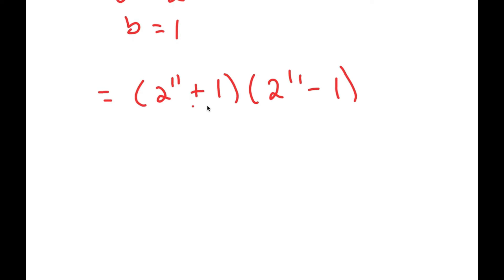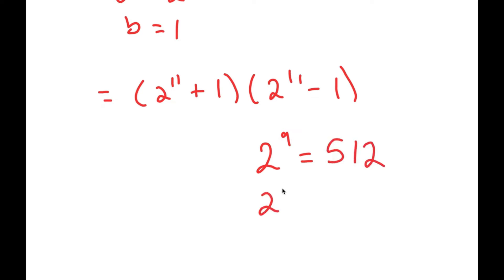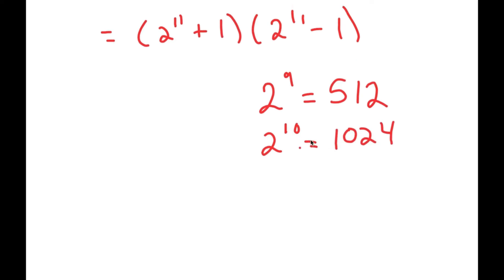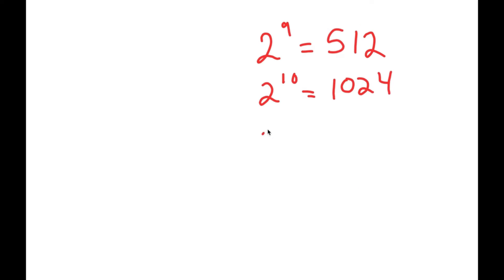Now, what is 2 to the power of 11? Well, 2 to the power of 9 is 512. 2 to the power of 10 is double of 512, which is 1024. So, 2 to the power of 11 is double of 1024, which is 2048.